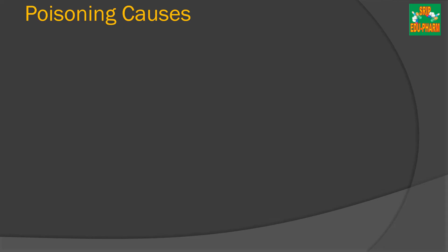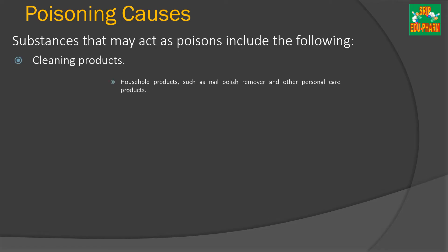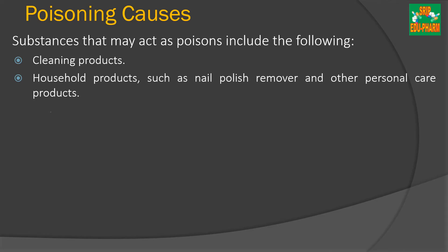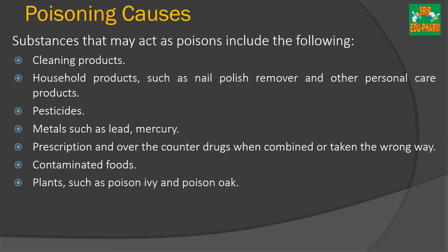There are a number of substances that may act as a poison, including cleaning products like phenyl and detergent; personal care products like nail polish remover; pesticides used to kill pests at home; metals such as lead and mercury found in old thermometers and batteries; prescription and over-the-counter drugs when combined or taken incorrectly; contaminated foods; poisonous plants like ivy and poison oak; and snake bite venom.